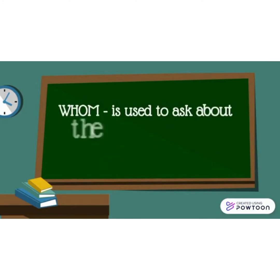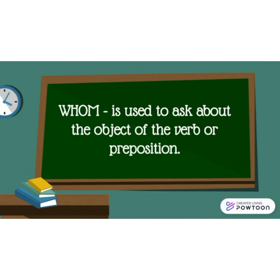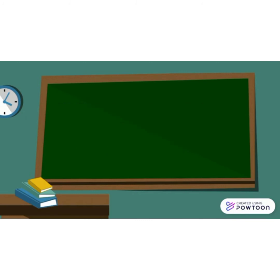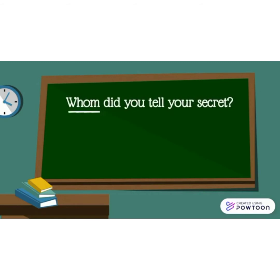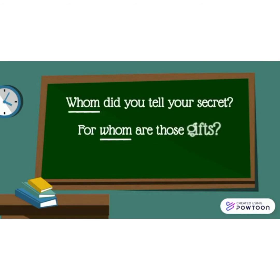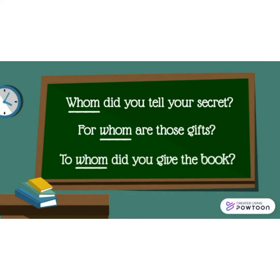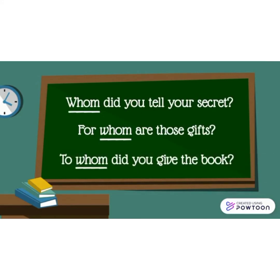'Whom' is used to ask about the object of the verb or preposition. Examples: 'Whom did you tell your secret?' 'For whom are those guests?' 'To whom did you give the book?'